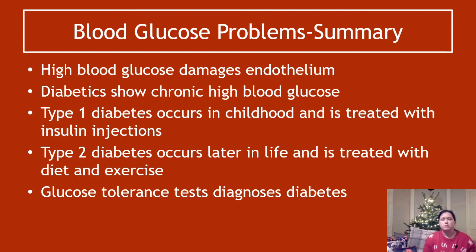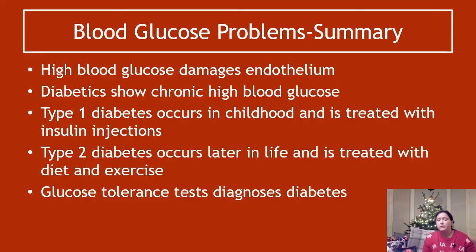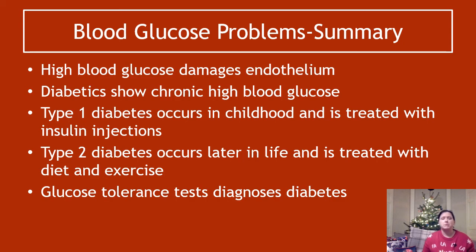To summarize — blood glucose problems and diabetes: high blood glucose damages endothelium; diabetics show chronic high blood glucose; type one diabetes occurs in childhood and is treated with insulin injections; type two diabetes occurs later in life generally and is treated with diet and exercise; and a glucose tolerance test diagnoses diabetes — you need to know the in-depth steps. That's the end of the blood glucose part. The last video is on obesity, looking at BMI and some formulas for BMI calculations.